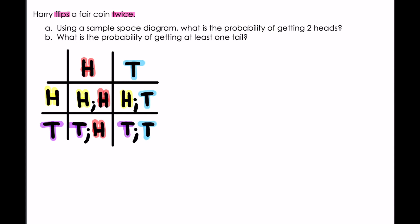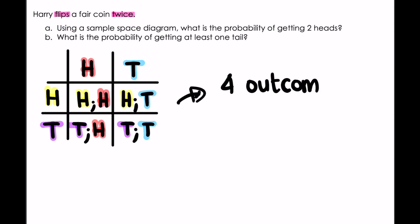What we can tell from our sample space diagram is that we have four outcomes in total: heads-heads, heads-tails, tails-heads, and tails-tails. So those are our four possible outcomes.